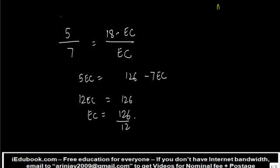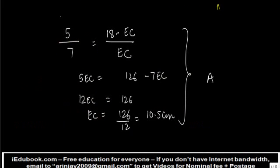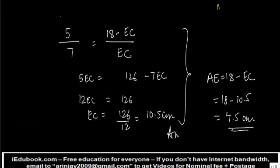or EC is equal to 126 by 12, which is 10.5 centimeter. What do we need to do here? We need to find out the value of AE, and AE is equal to 18 minus EC. So AE is equal to 18 minus EC, or 18 minus 10.5, which is 7.5 centimeter. And that's your answer.